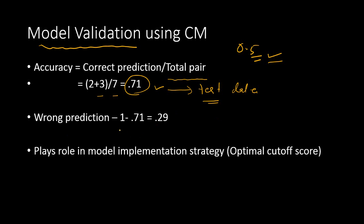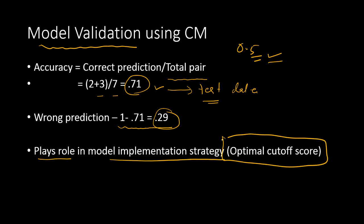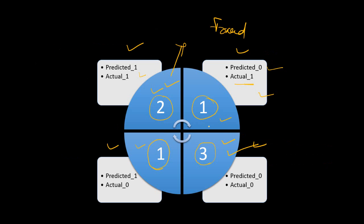Wrong prediction can also be calculated by subtracting the accuracy from one, and this number should be as minimum as possible. This matrix also plays a role in model implementation strategy and finding the optimal cutoff score. The numbers in the confusion matrix were obtained by assuming a cutoff of 0.5 — meaning a customer with a probability score greater than 0.5 is predicted as bad. But who told us this number should be 0.5?